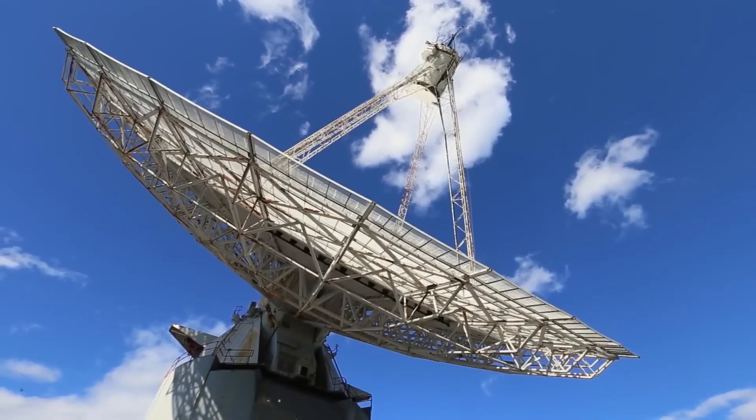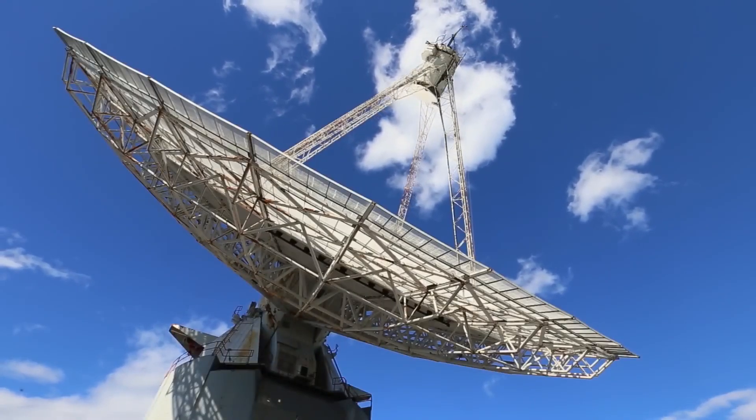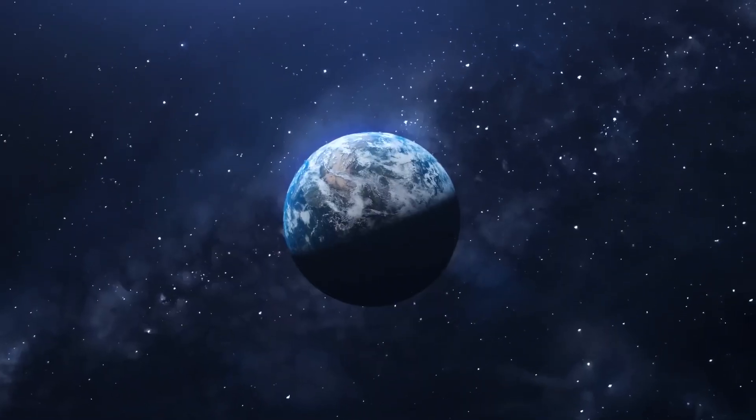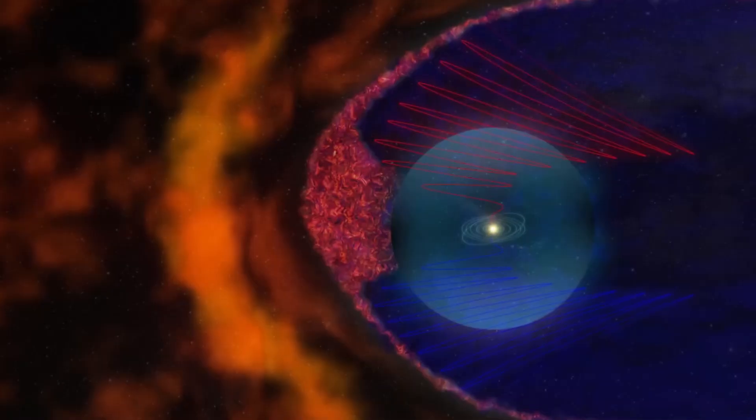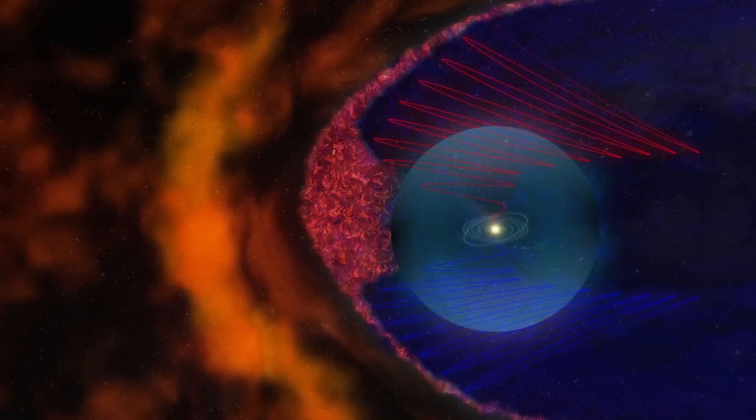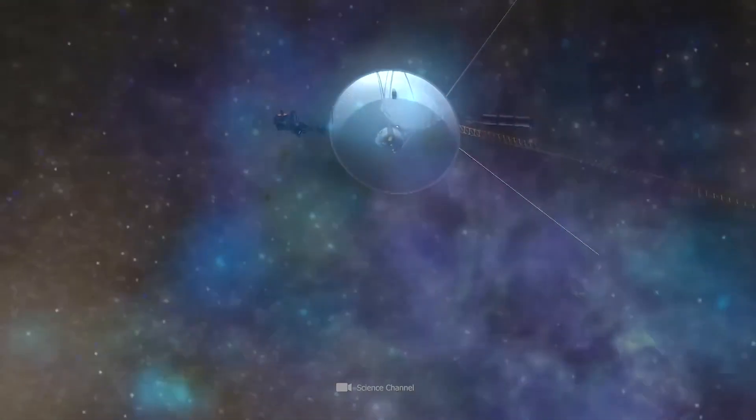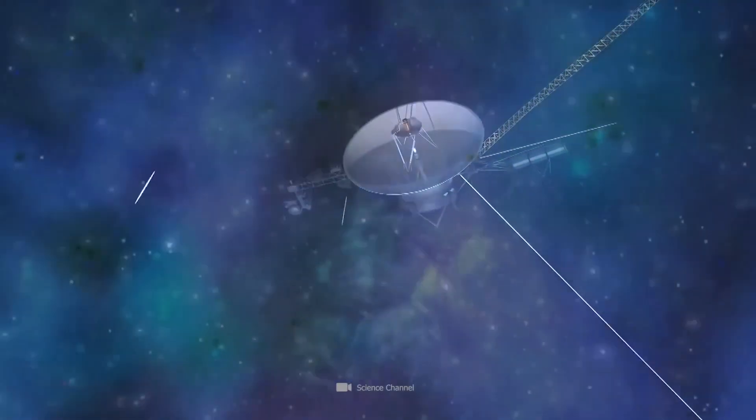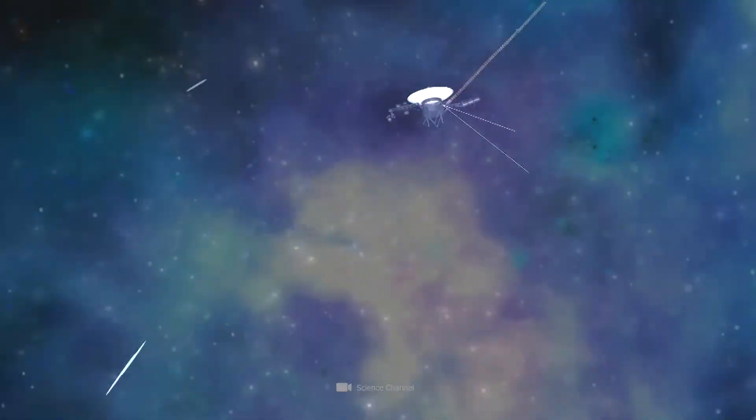The Voyager mission team also closely monitored any changes in the prevailing magnetic field as spacecraft moved in the interstellar medium, an environment composed of ionized gases and influenced by nearby stars.